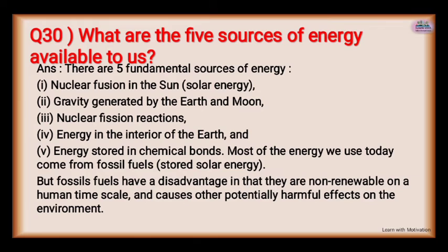What are the four sources of energy available to us? There are five fundamental sources: first, nuclear fusion in the sun — solar energy; second, gravity generated by the earth and moon; third, nuclear fusion reactions; fourth, energy in the interior of the earth; fifth, energy stored in chemical bonds. Most energy we use today comes from fossil fuels — stored solar energy — but fossil fuels are non-renewable on a human timescale and cause harmful effects on the environment.